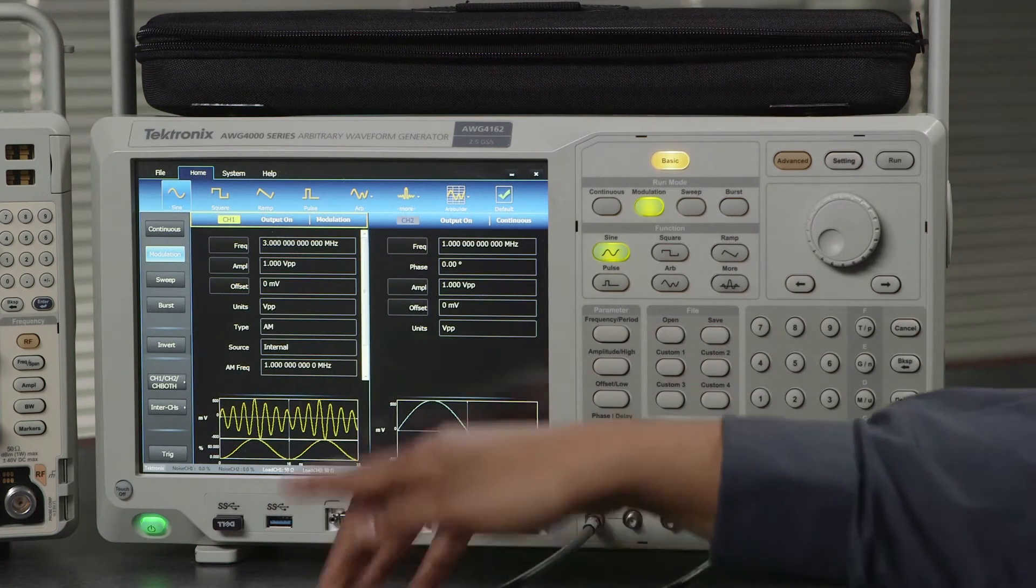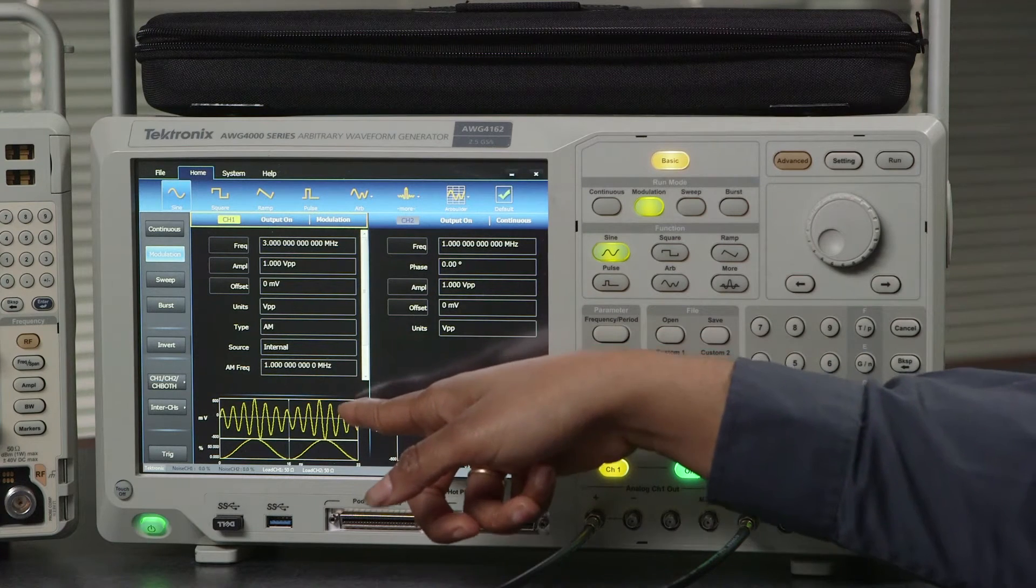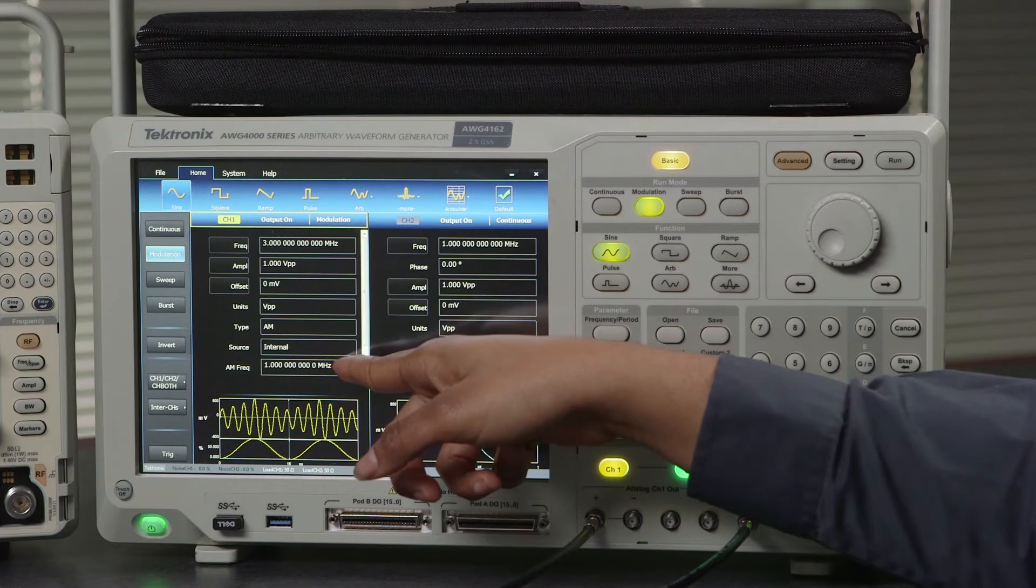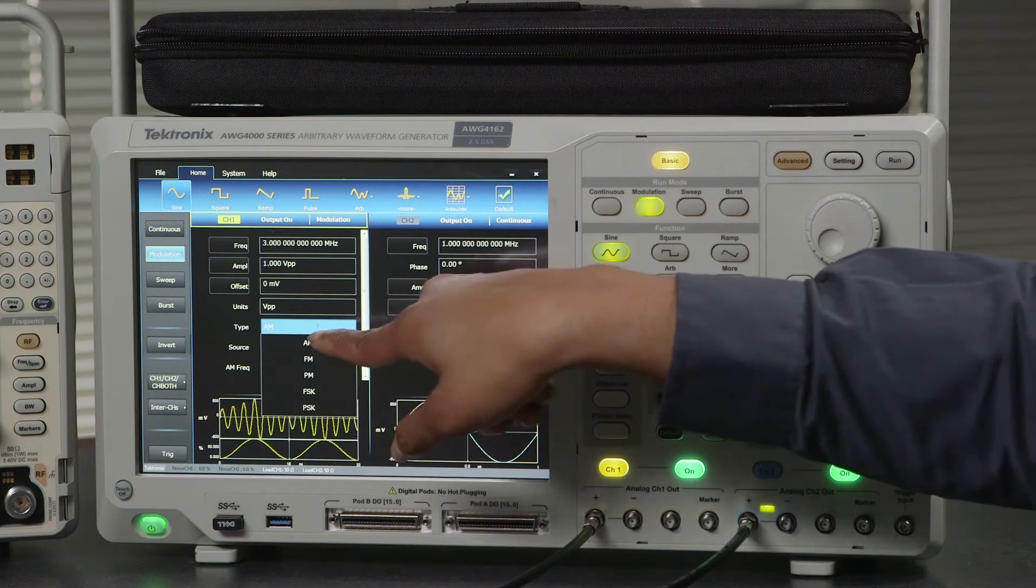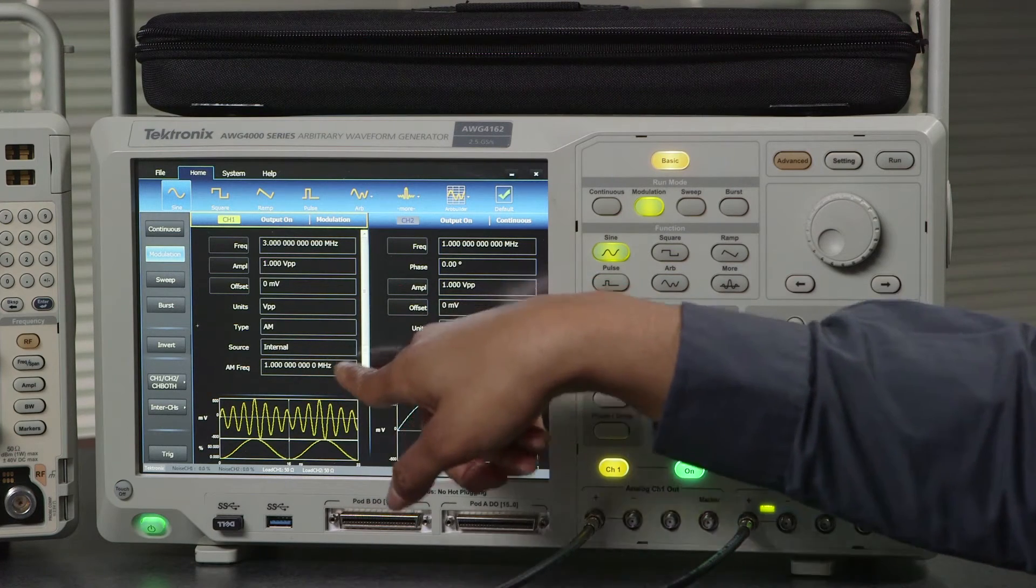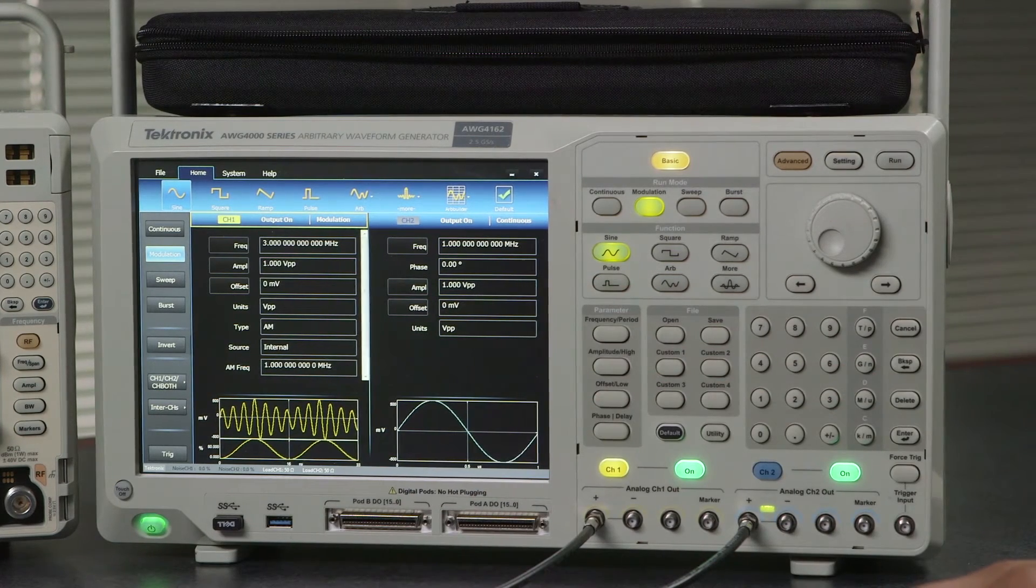As you can see on our modulation menu for channel 1 you can see the frequency as well as the AM frequency. You also have the option of changing what type of modulation here. We can change our source whether it be internal or an external source that we could pull in from a trigger.